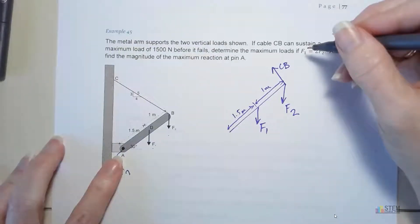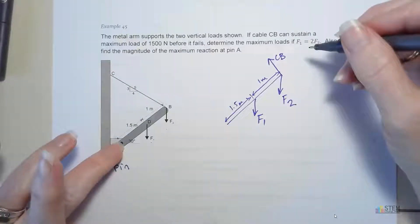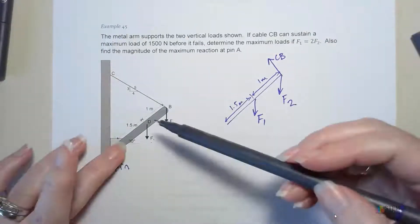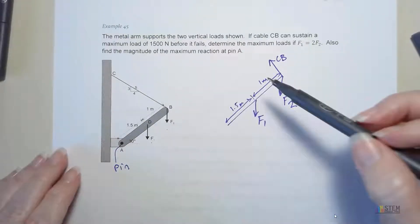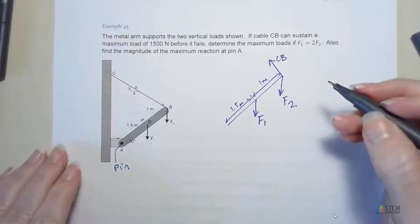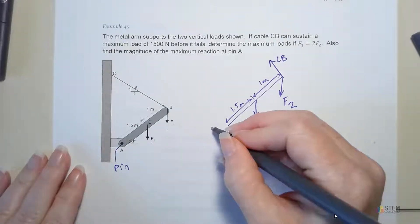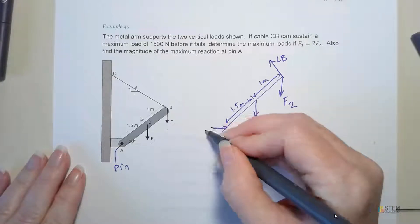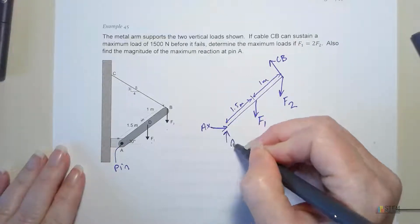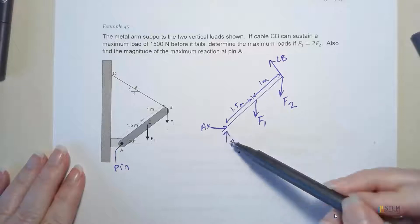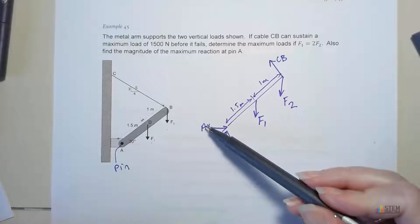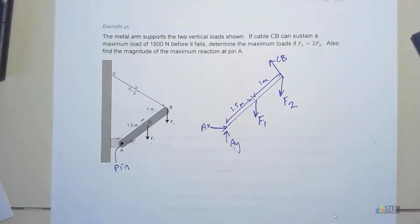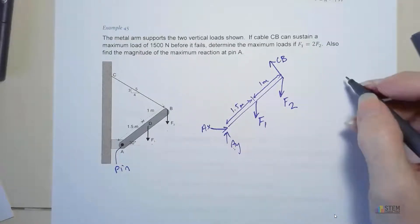Lastly we've got this pin. Remember what the pin does - it holds this in place but it still can rotate about the axis going through the pin. So it prevents translation in the x and y directions but allows rotation. Here we'll have Ax and Ay. I just assume those directions. Don't spend a lot of time trying to figure it out. Just assume your directions and go forward from there.